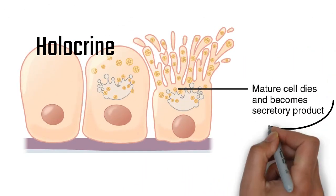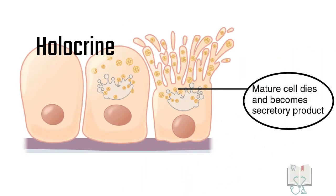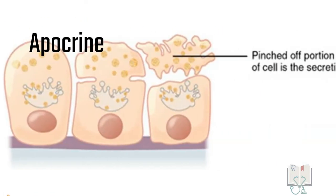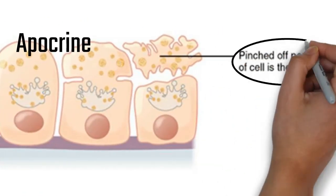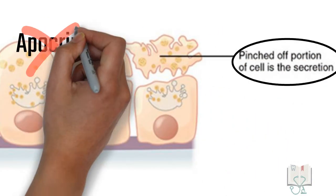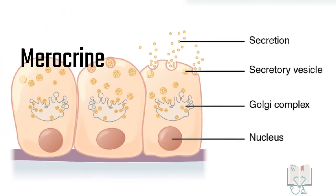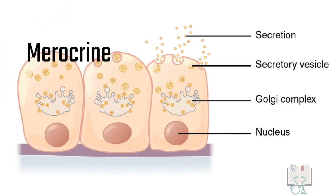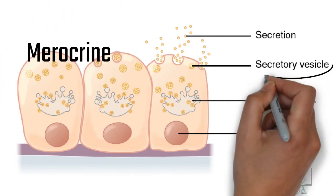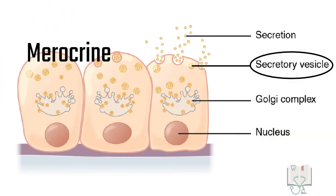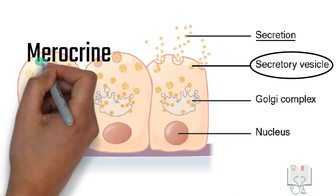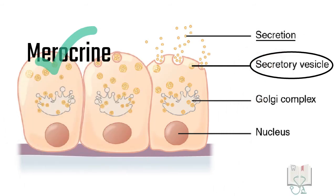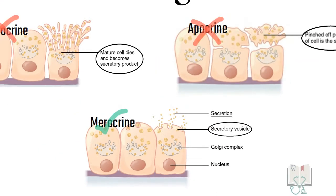During formation of saliva, the cells of the acinus do not degenerate for the release of saliva, so they are not holocrine glands. Nor is there any loss of cytoplasm, so not apocrine glands either. What happens is that saliva is formed by secretory vesicles which are released by exocytosis with no loss of cytoplasm, making them merocrine glands.